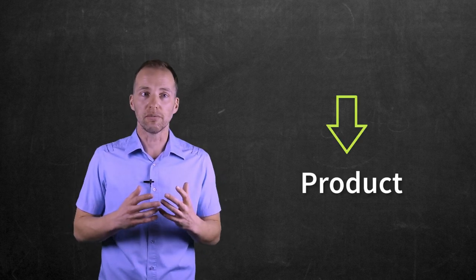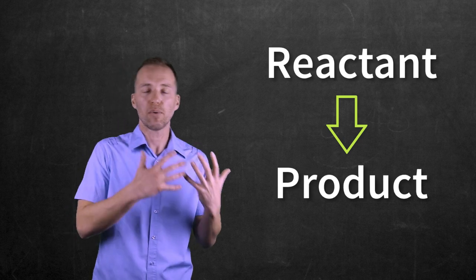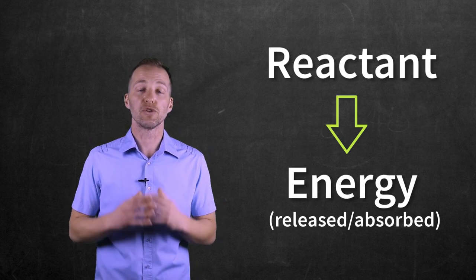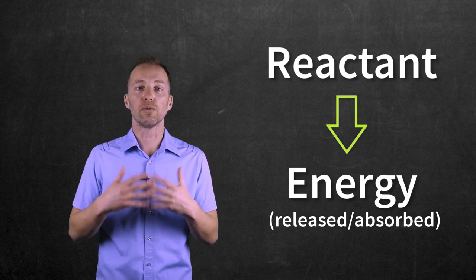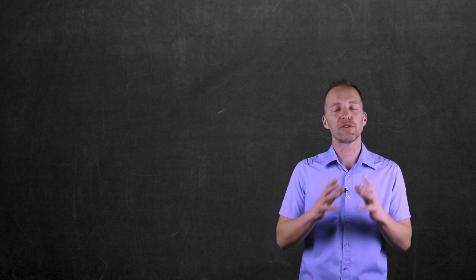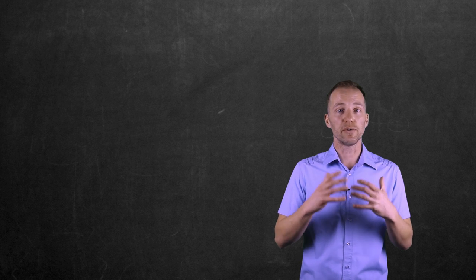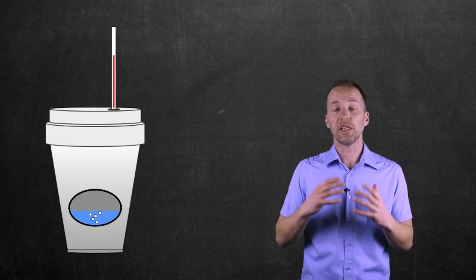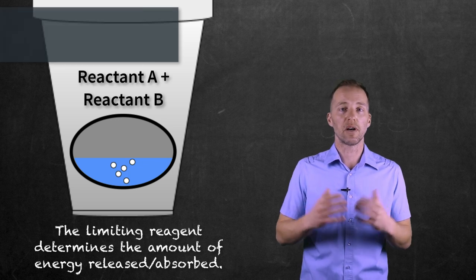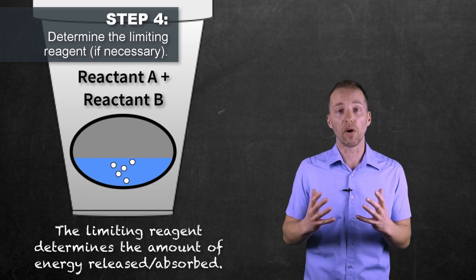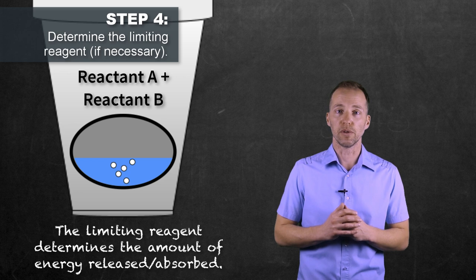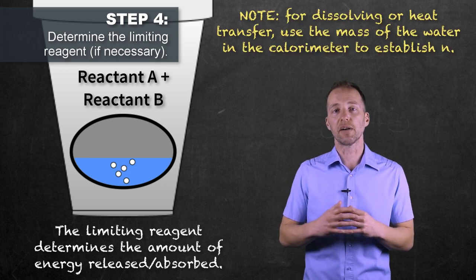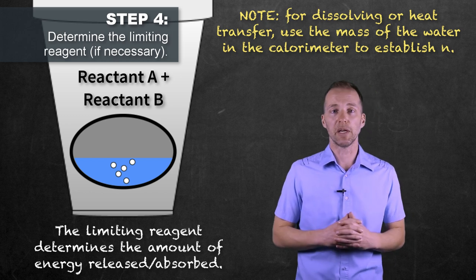The amount of product produced in a chemical reaction relates to the amount of reactant used — the more reactant, the more product and the more energy released or absorbed. We have to take this into account in our calculations. Just as the limiting reagent determines how much product is produced, it also determines how much energy is released or absorbed. So we need to establish which of the two substances is our limiting reagent. If you're analyzing a process that isn't a chemical reaction, you don't need this step, but we do need to determine the number of moles of the limiting reagent.